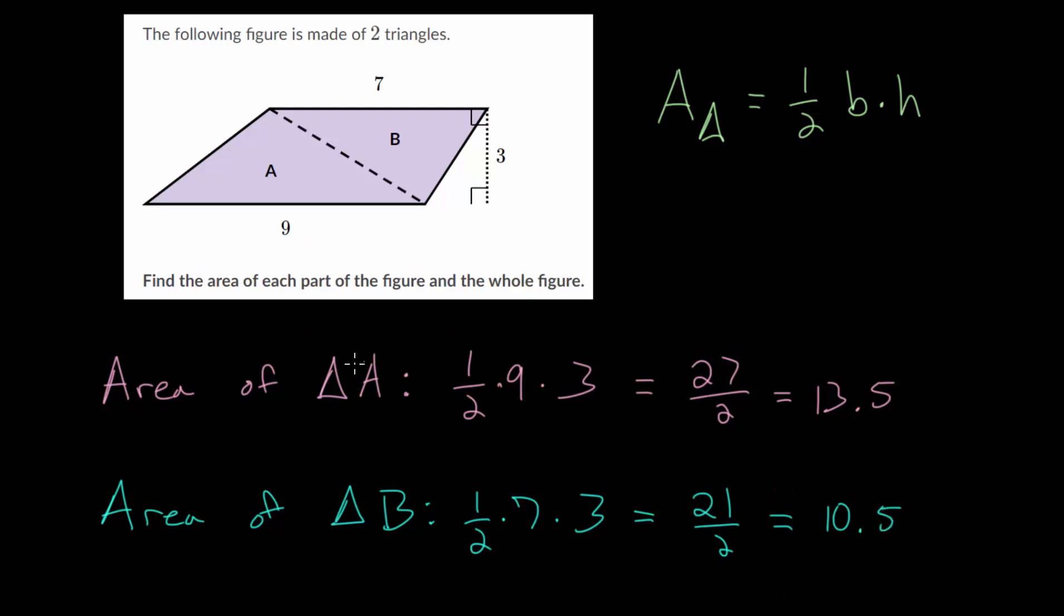We found the area of each of the parts, but we now need to find the total area. The total area is just equal to the area of triangle A plus the area of triangle B. So that would be 13.5 plus 10.5. Thirteen and ten, that's 23, and 0.5 plus 0.5, that's one. So we get 24. For this we don't have any specific units, so we can just say this is 24 square units.